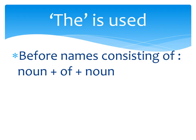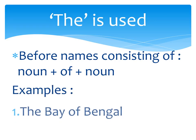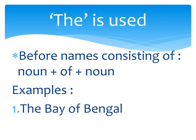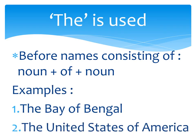Use number ten: before names consisting of noun of noun — we use 'the' before the first noun. For example, 'the Bay of Bengal,' 'the United States of America.' So before noun-of-noun constructions, 'the' is used before the first noun.